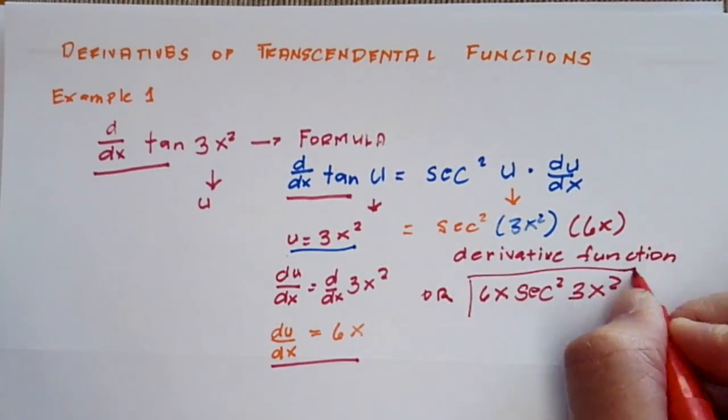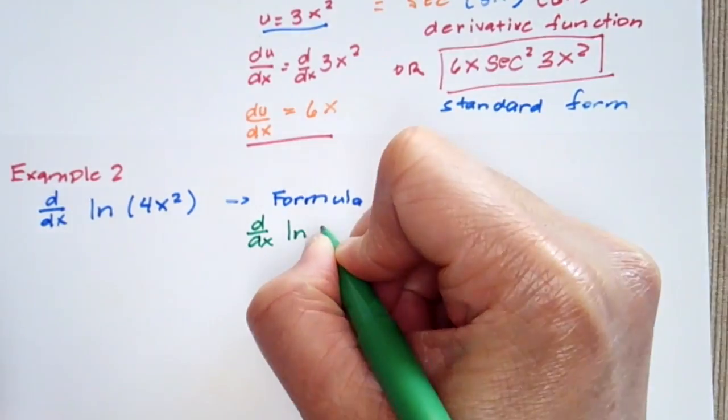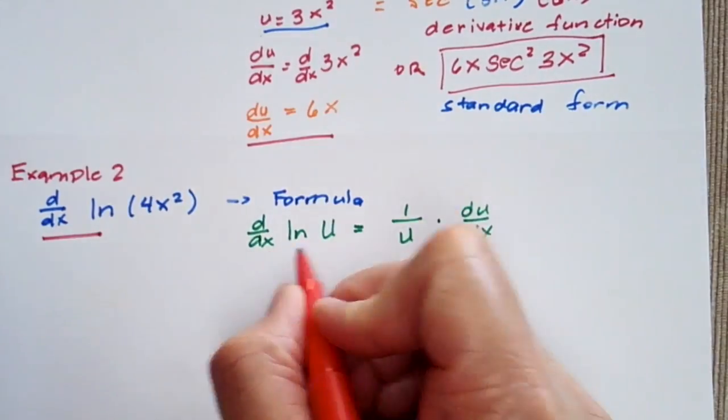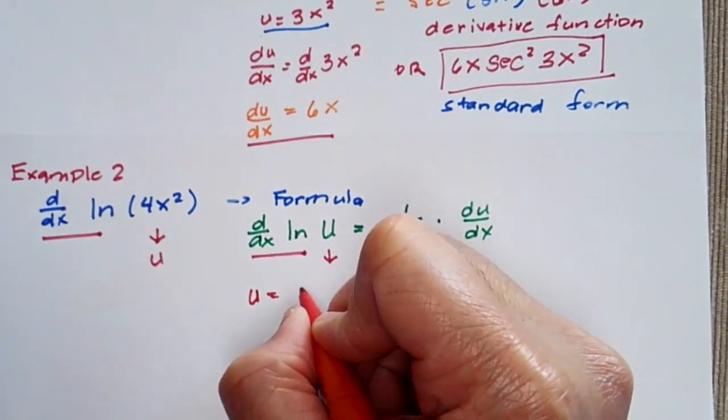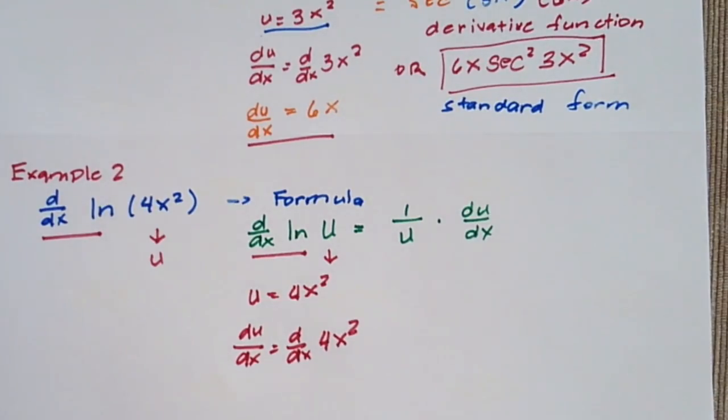And if we're going to find the derivative of ln 4x squared, its formula is 1 over u times the du dx, where u is 4x squared, and your du dx is 8x.